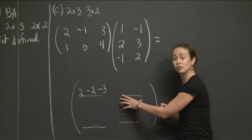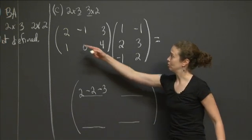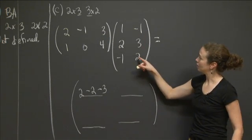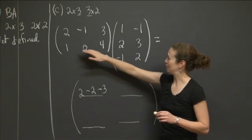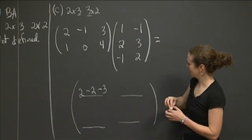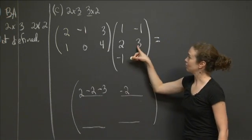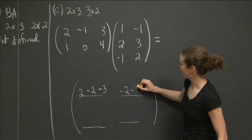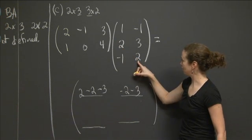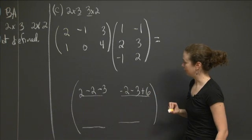Then I do for this second one, it's row 1, column 2. So I do row 1, column 2. So I'll try to keep my head out of the way. I realize I keep stepping in front. So it's 2 times negative 1. I get negative 2. Negative 1 times 3. So I get negative 3. And 3 times 2 gives me 6.